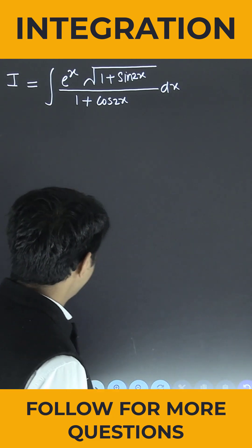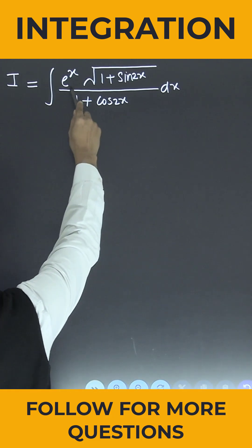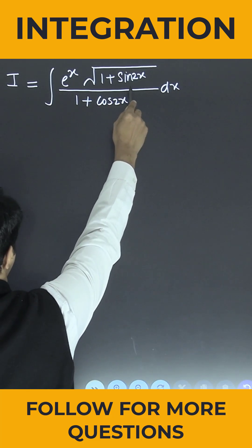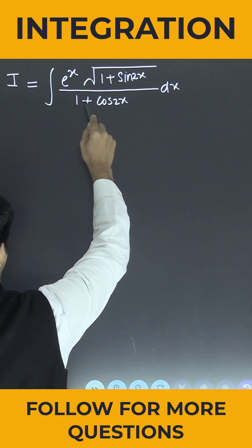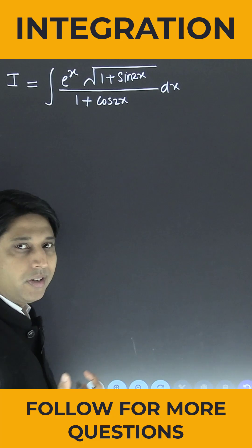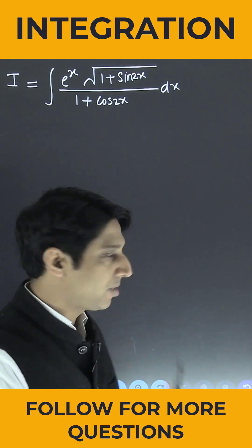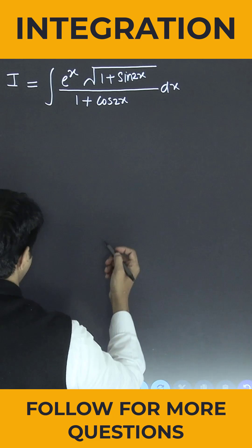One integration is given to us: the integral of e^x times the square root of (1 + sin 2x) divided by (1 + cos 2x) dx. Now it's a very easy problem. We have to simply rearrange this numerator and denominator separately.